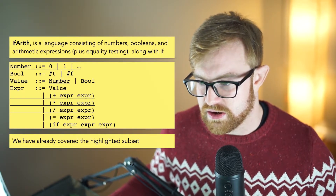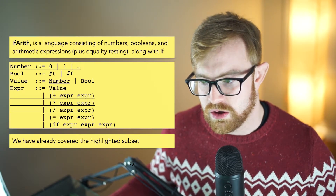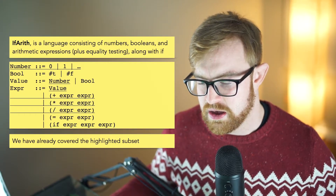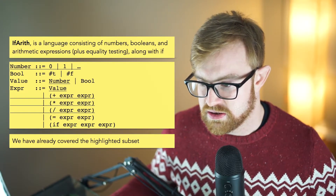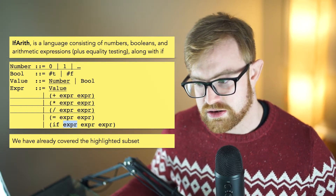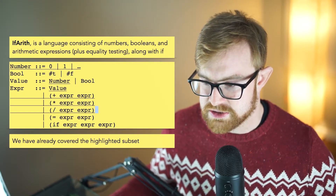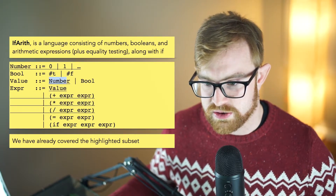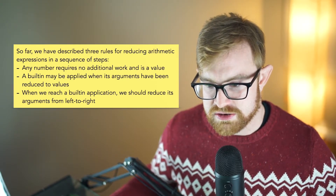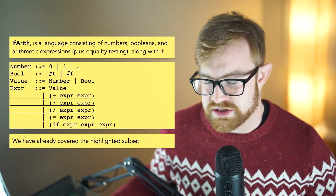A bool is either going to be the symbol hash-T or hash-F for false. A value is either a number or a boolean. And then an expression is either a value, or plus of two expressions, times of two expressions, divide of two expressions, equals of two expressions, or an if of a guard, a true branch, and a false branch. We've already covered the arithmetic subset of the language; we really only need to think about equals and if.